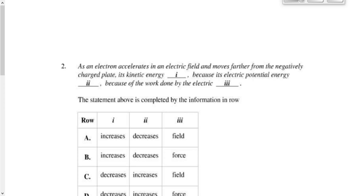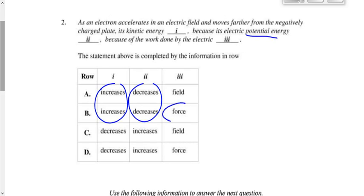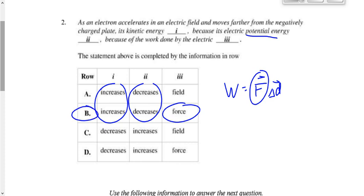Question two: as an electron accelerates in an electric field and moves further from the negatively charged plate, what happens to its kinetic energy? As the electron speeds up, its kinetic energy increases, so the answer is A or B. The electric potential energy decreases as kinetic energy increases, because total energy remains constant. Work is done by the electric force — F times d, force times displacement, not field times displacement.